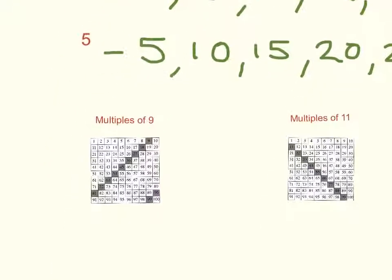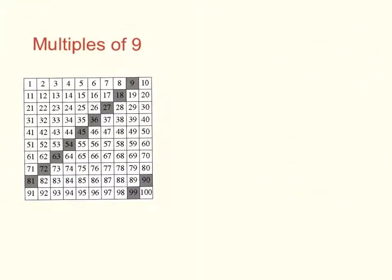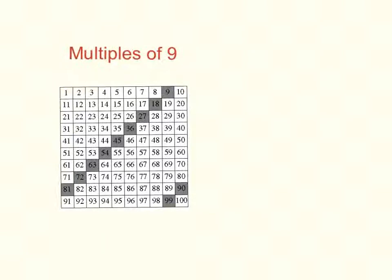Down here I've got some hundreds charts where we can see that on a hundreds chart this chart shows multiples of 9. So we can see as we go along 9, 18, 27, 36, 45, 54, right through up to 99.